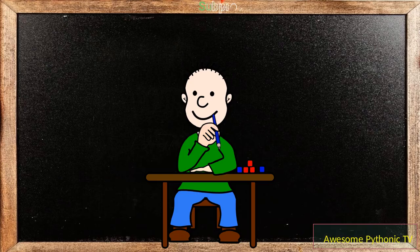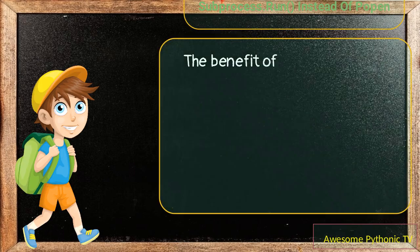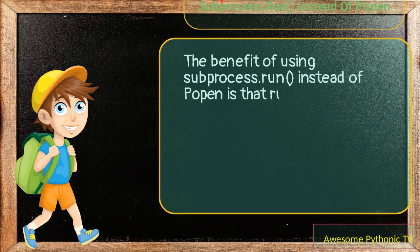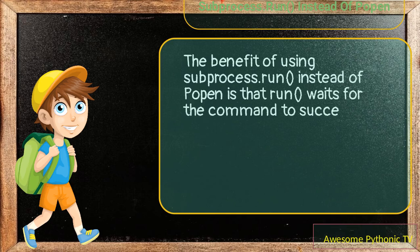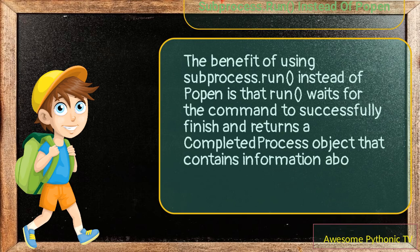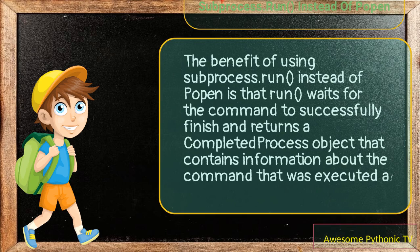The benefit of using subprocess.run instead of Popen is that run waits for the command to successfully finish and returns a CompletedProcess object that contains information about the command that was executed and the return code.